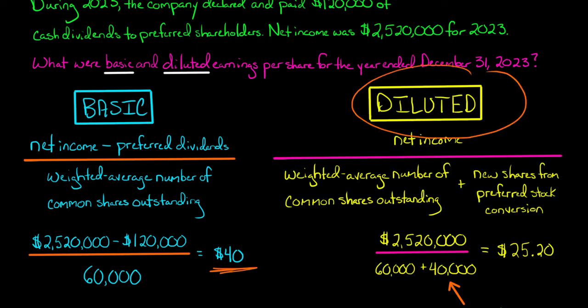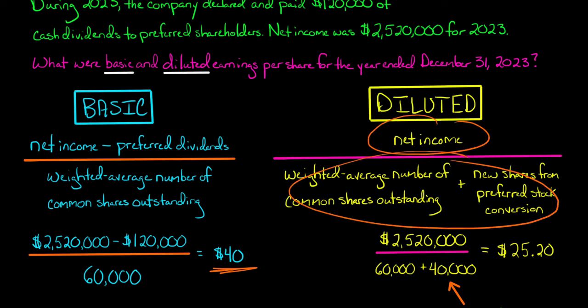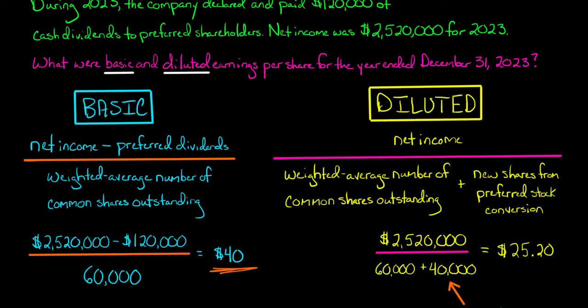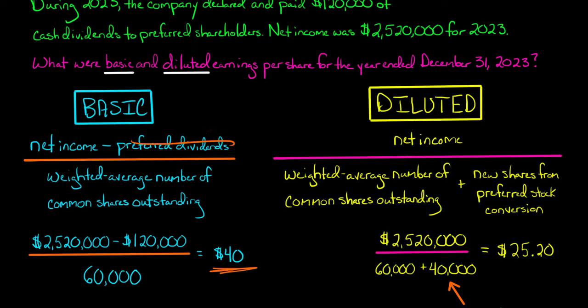Now for diluted earnings per share, we have adjustments to both the numerator and denominator. In the numerator, we are not subtracting the preferred dividends, so our numerator is simply $2,520,000 — we are not subtracting that $120,000.